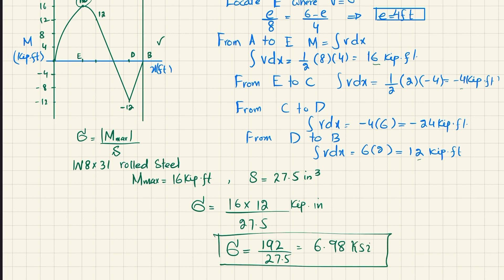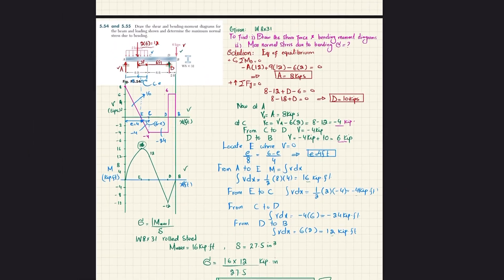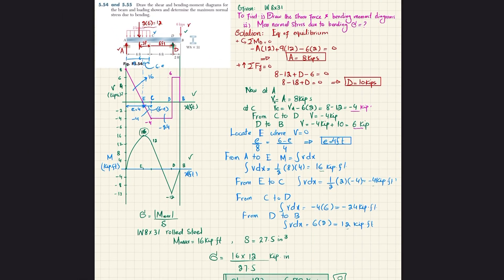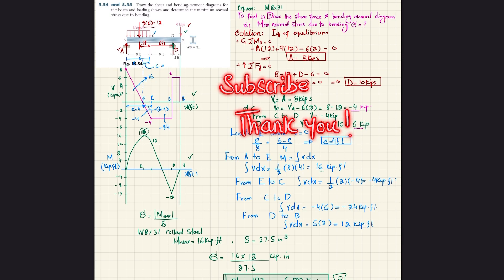So 6.98 ksi is the answer for the maximum normal stress in this beam. I hope you enjoyed this video and learned a lot from it. If you're new to my channel, please subscribe and press the bell icon for notifications. If you have any questions, ask in the comment section. Thank you for watching.